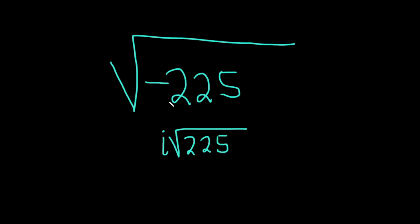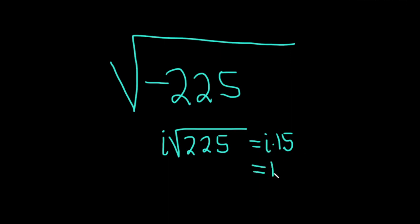Again, the very first step is to take this negative, and it becomes an i, and then we still have the square root of 225. Now the square root of 225 is equal to 15. This is i times 15. However, nobody really leaves the i in the front — they usually write it in the back. So this is equal to 15i, and that would be the answer.